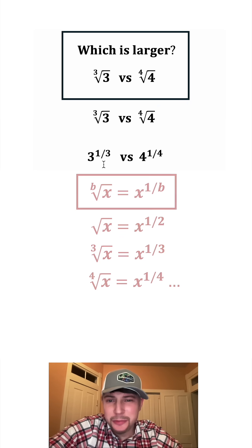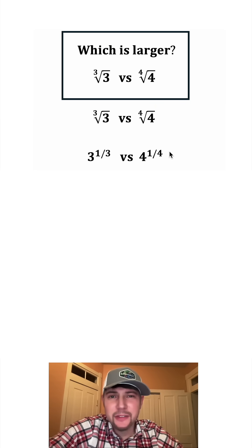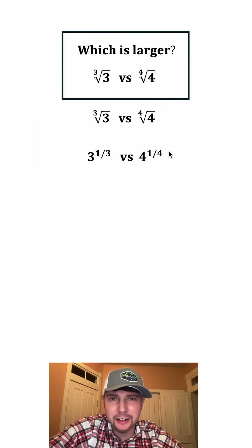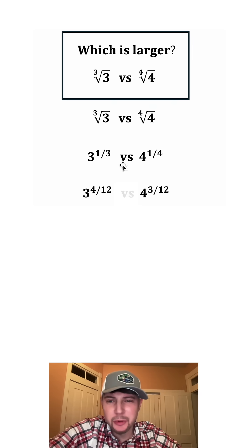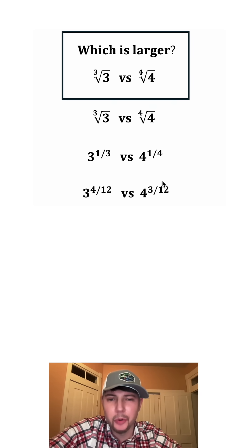Now from here, we have two fractions. Let's give these fractions a common denominator. This one third can be written as four twelfths, and the one fourth can be written as three twelfths. So we end up with three to the four twelfths versus four to the three twelfths.